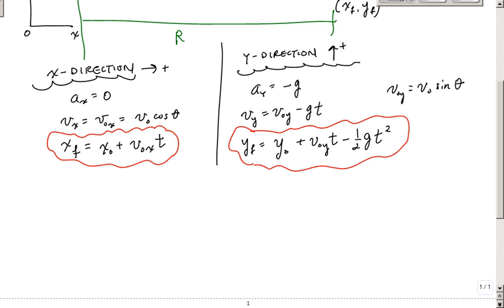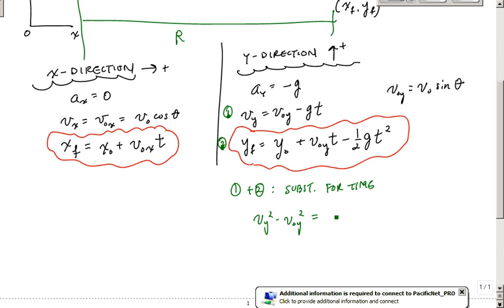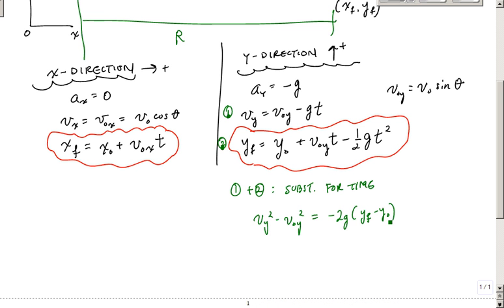Sometimes they ask you for the max height. In the case of the max height or some other thing, what we do is we just combine this equation with this equation here. And when you combine these two equations, we'll call this 1 and 2, if you combine 1 and 2, substitute for time, you get a really popular result. You get Vy squared minus V0y squared equals minus 2g times Yf minus Y0. Have you guys all seen this before? Yeah, this is real popular in physics. But all you do is solve for time here, solve for time here, and then substitute into that position equation, and this is what you get.